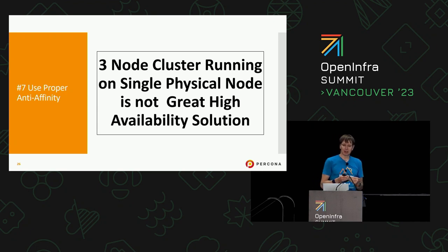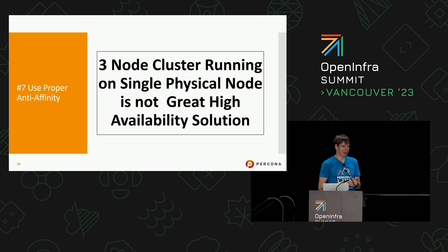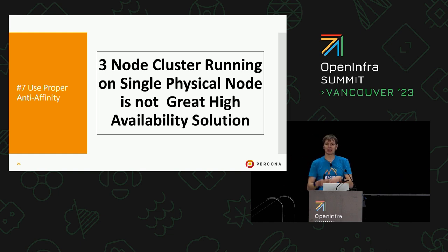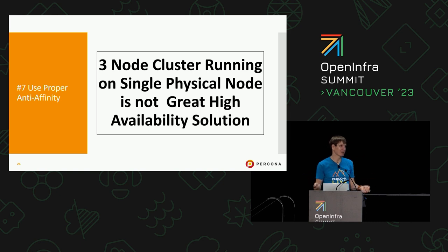The next one is to use proper anti-affinity. Without it, you may end up with all nodes of a three-node database cluster placed on the same physical server — not a good idea. Or, if you have an environment with multiple racks, you can set affinity across different racks, so if a whole rack fails due to power loss, you still have availability. That is an important thing for databases.